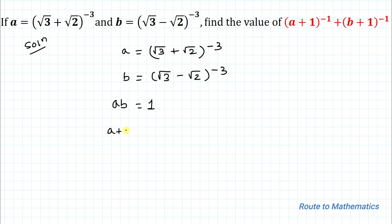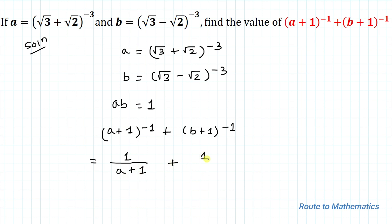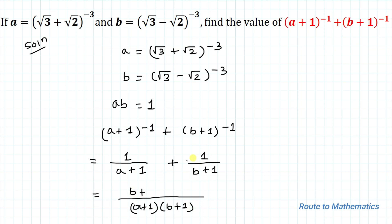Now, what we are asked to find is (a+1)^(−1) + (b+1)^(−1). Converting the negative powers to positive by taking reciprocals, this becomes 1/(a+1) + 1/(b+1). Taking the LCM, the denominator is (a+1)(b+1) and the numerator, after cross-multiplying, is (b+1) + (a+1) = a + b + 2.